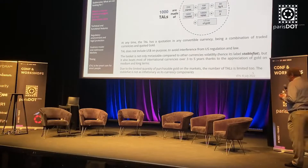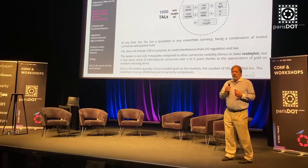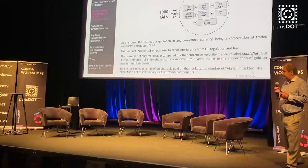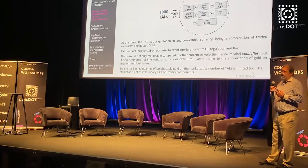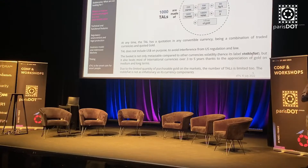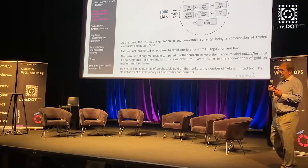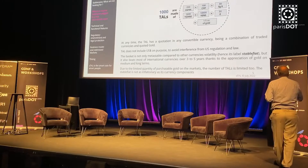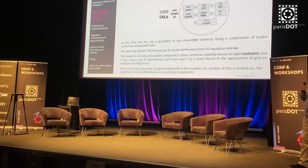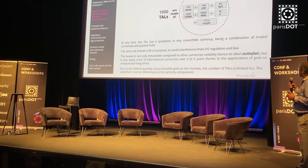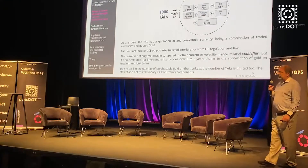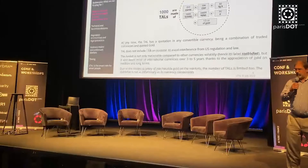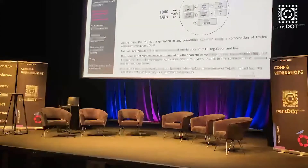You want to protect value, transfer value, and hold value as long as possible without losing it. The underlying asset of the STAL is the basket named the TAL — a basket made of currencies and physical gold. More precisely, 1,000 TALs are composed of 250 euros, 100 Swiss francs, 80 Singapore dollars, 1,600 yuan, 18,000 yen, 50 British pounds, and one-fifth of a physical gold ounce. This composition is fixed.